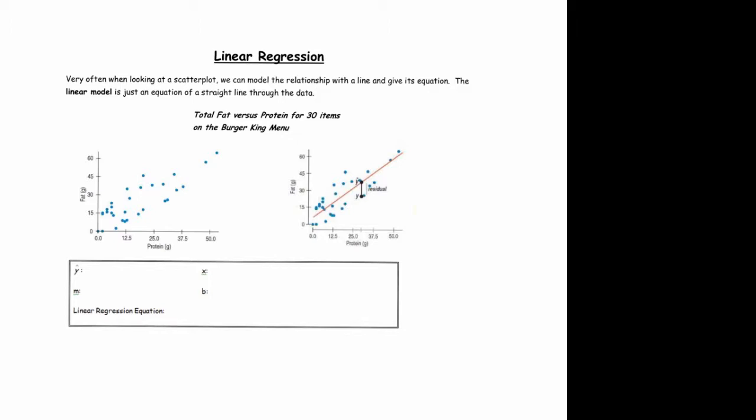Let's get a couple definitions straight. Y with the hat over it represents our predicted value—the predicted response variable. M is slope, x is our independent or explanatory variable, and b is our y-intercept.